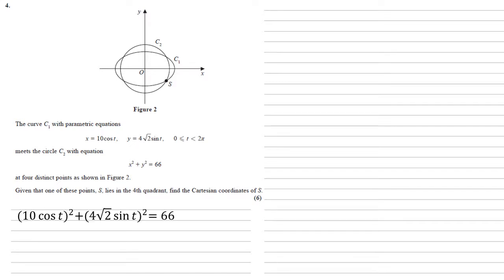By substituting our parametric equations into the equation for the circle, we get that 10 cos t all squared plus 4 root 2 sin t all squared equals 66. Squaring the brackets gives us 100 cos squared t plus 32 sin squared t equals 66.